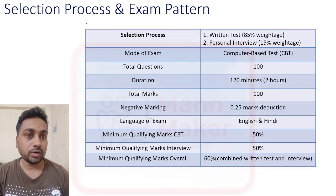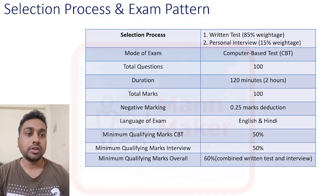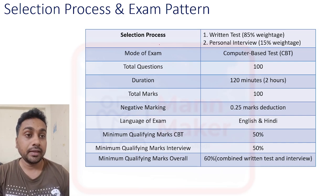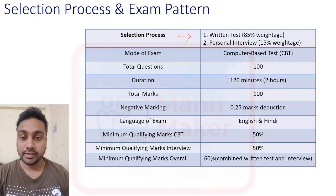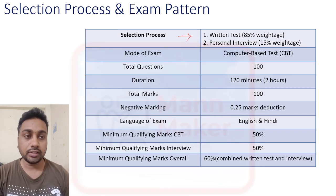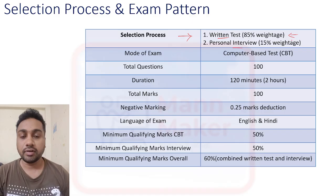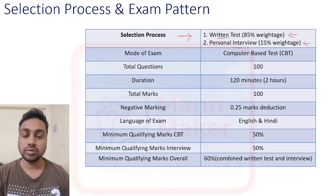First of all, let's talk about the selection process and exam pattern for ECIL GT. The selection process will be based on a written test and a personal interview — two steps. First, you need to clear the CBT (written test), and then clear the personal interview. The written test carries 85% weightage and the personal interview carries 15%.